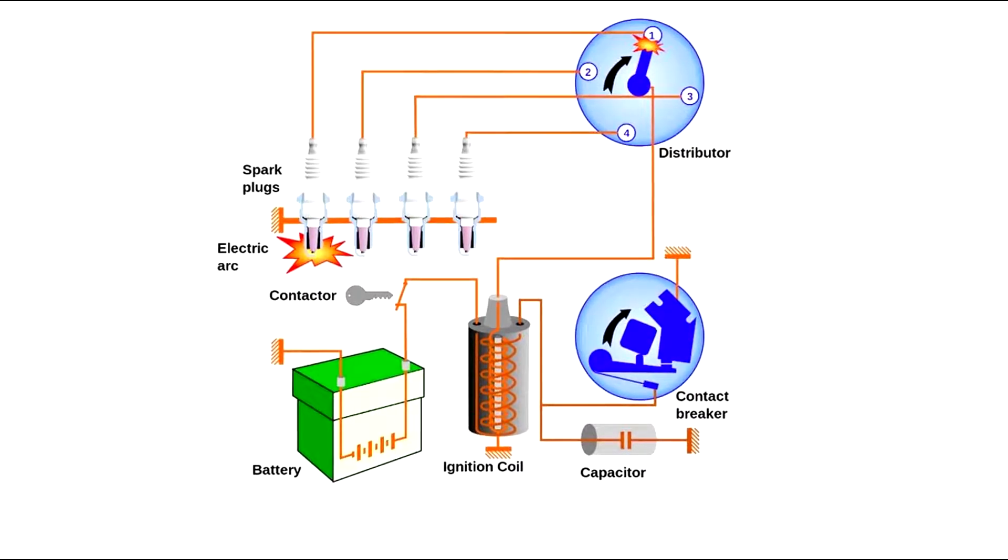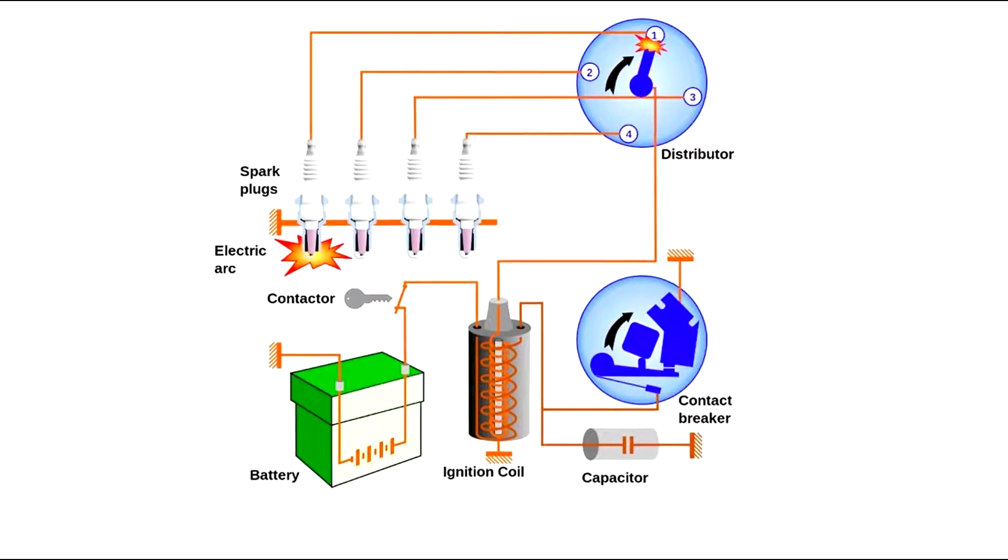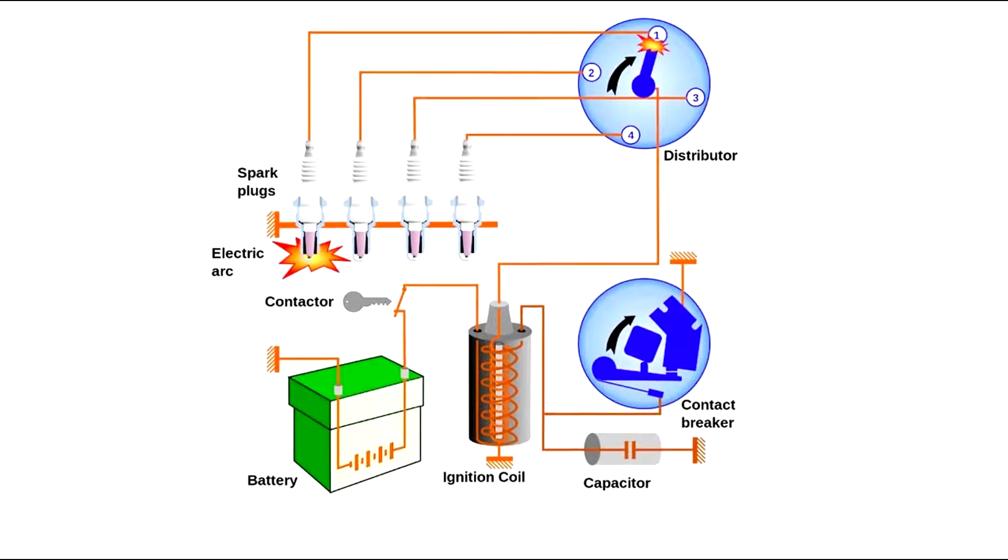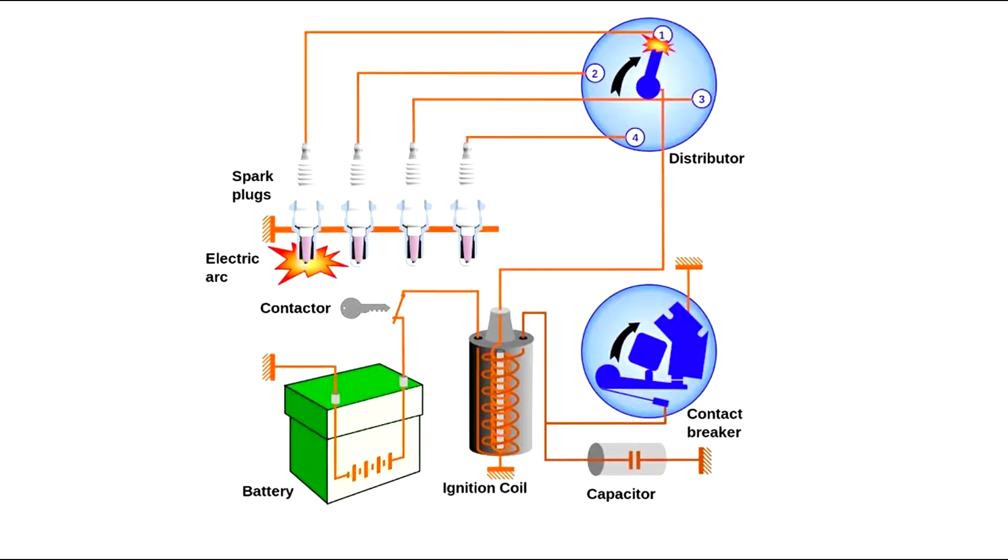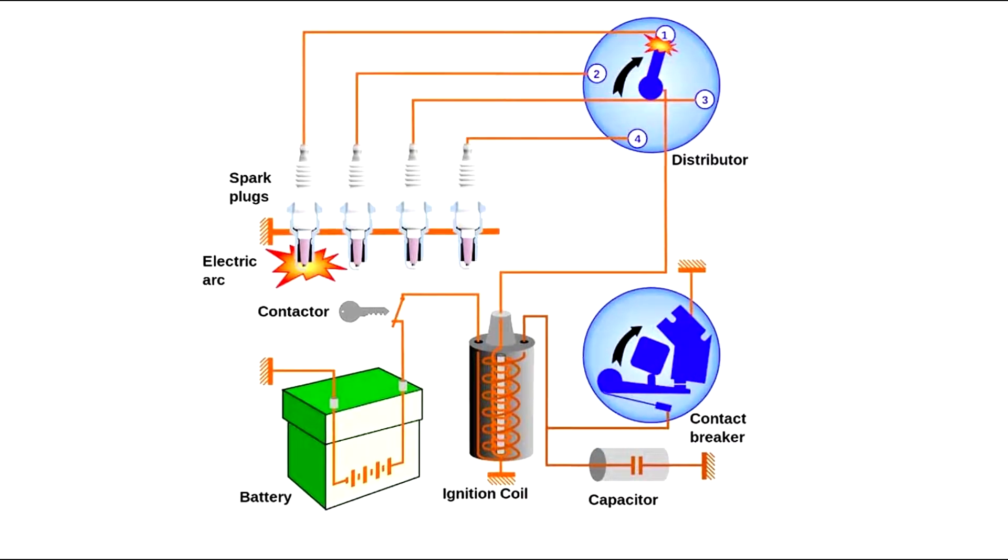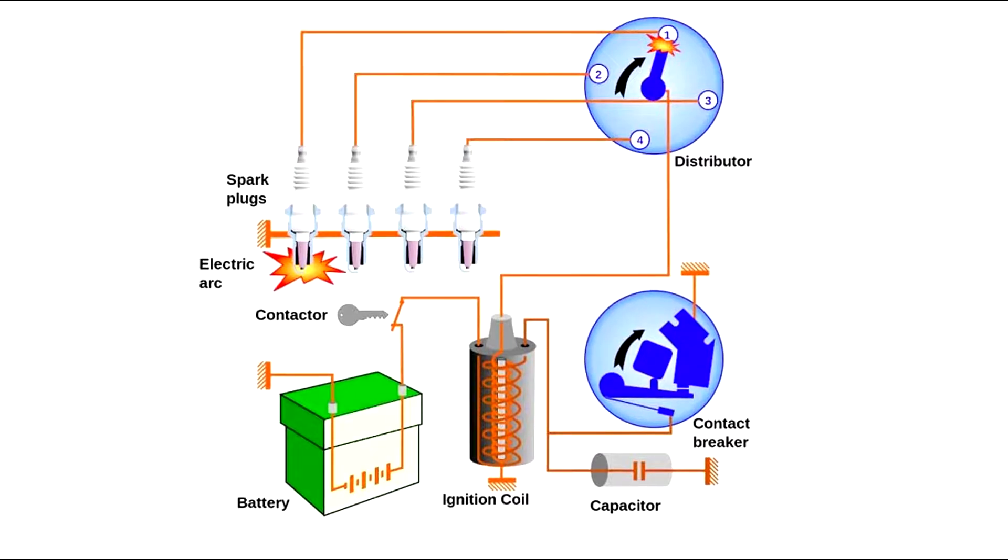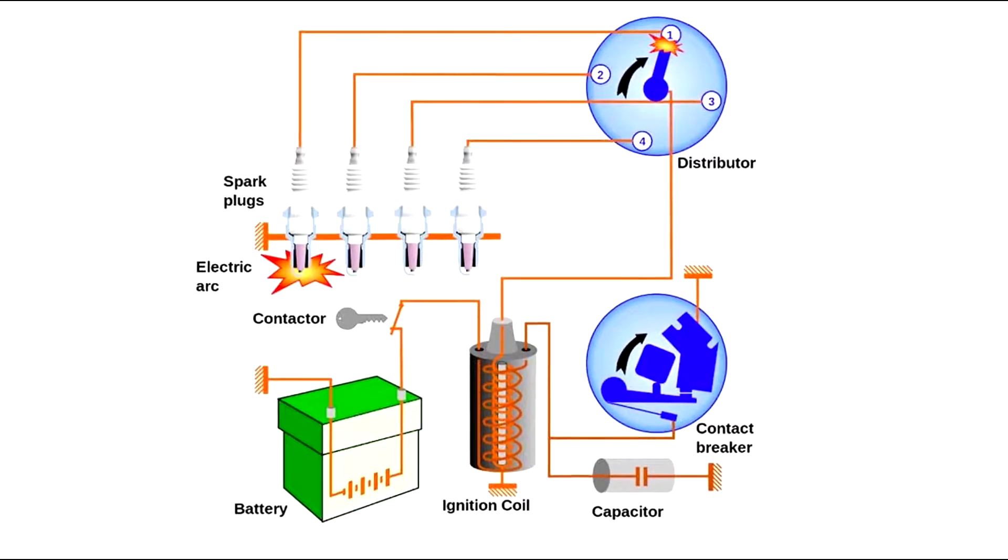Electrical: the spark plug delivers the electrical spark that ignites the fuel air mixture for combustion. The metal core is insulated from the outer metal casing with porcelain. The spark jumps between these conductive surfaces.